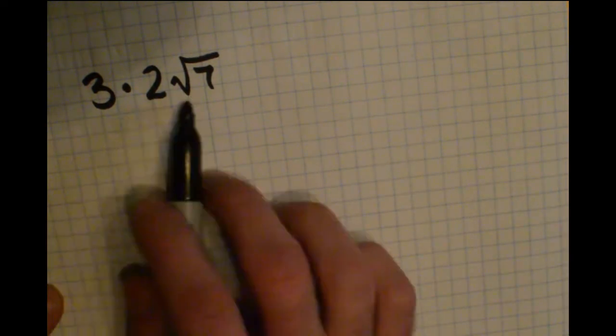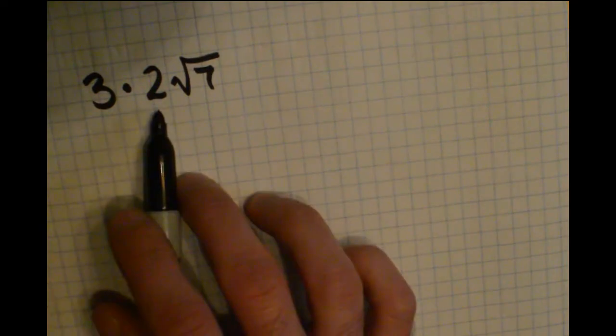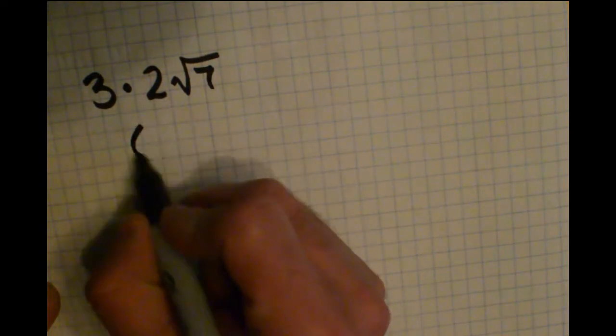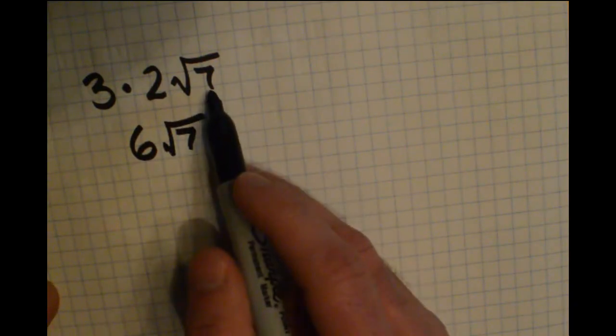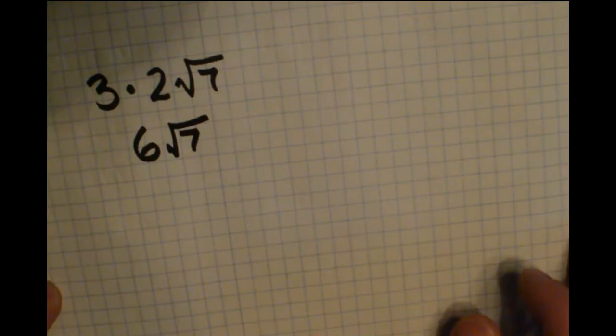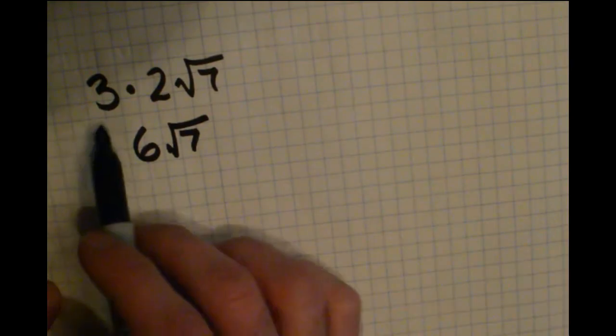We're multiplying these two together. 3 and 2 are both outside of a radical, so those multiply together to get 6. There's nothing to multiply with that 7 because there are no other radicals being multiplied. So 3 times 2 radical 7 is just 6 radical 7.